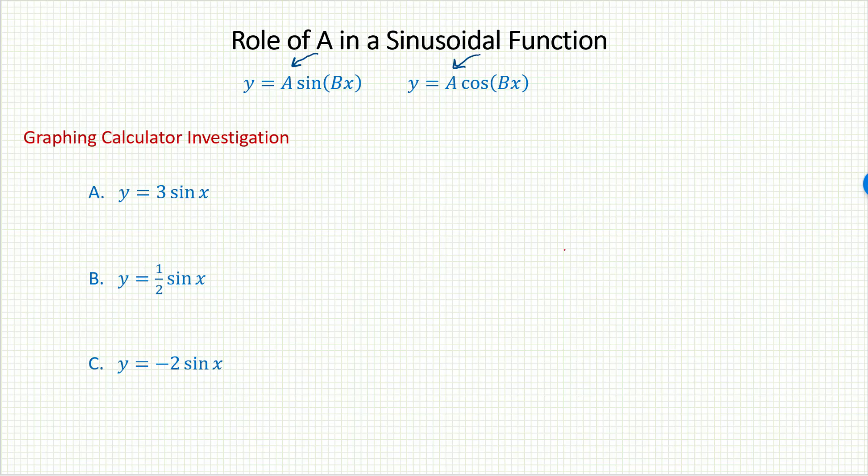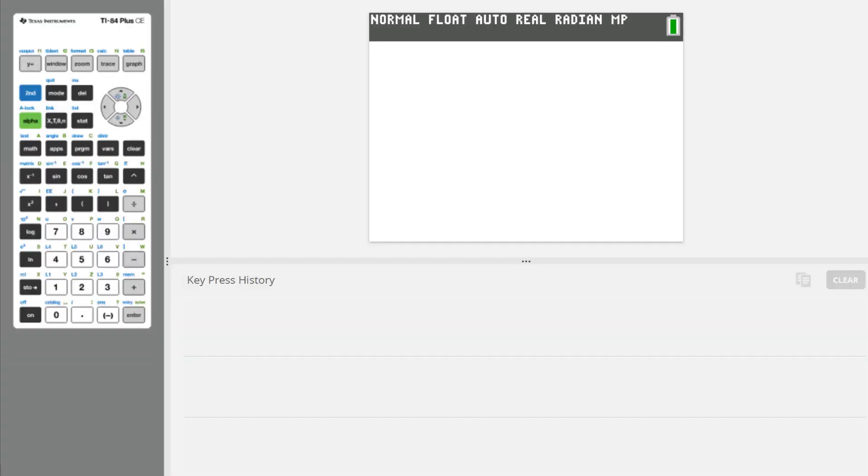What will that multiplying number do to the graph? Well, let's go to the graphing calculator and we'll investigate. The first thing I'll do is put in the regular sine function. I am in radian mode. Let's go to y equals and type it in.